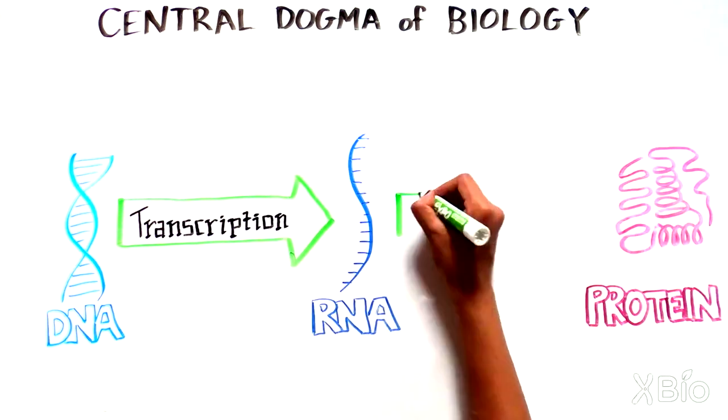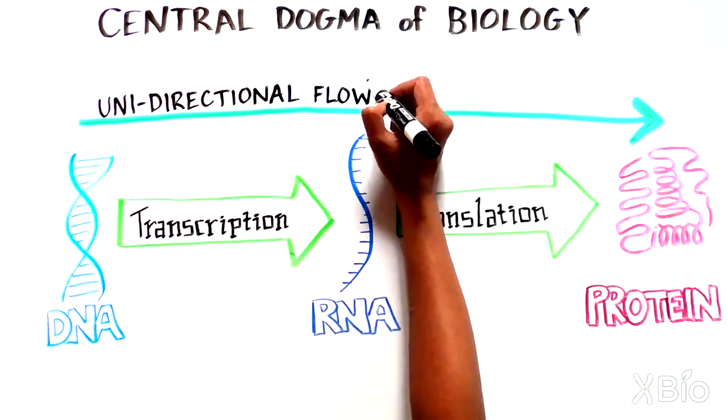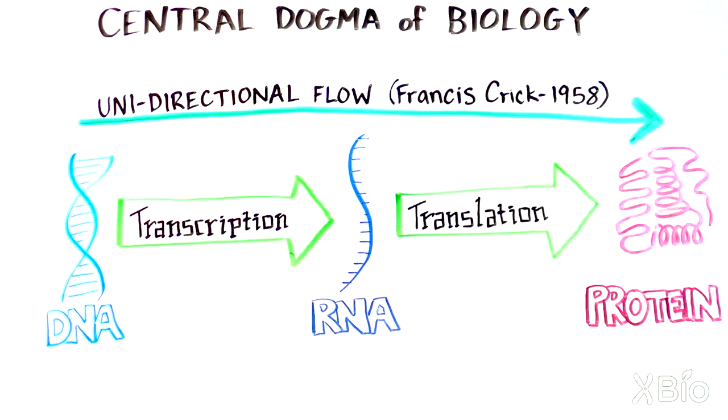The idea that the flow of information is unidirectional was put forth by Francis Crick in 1958. The very word dogma means that this is the truth, a fact. So can you imagine challenging this established truth?